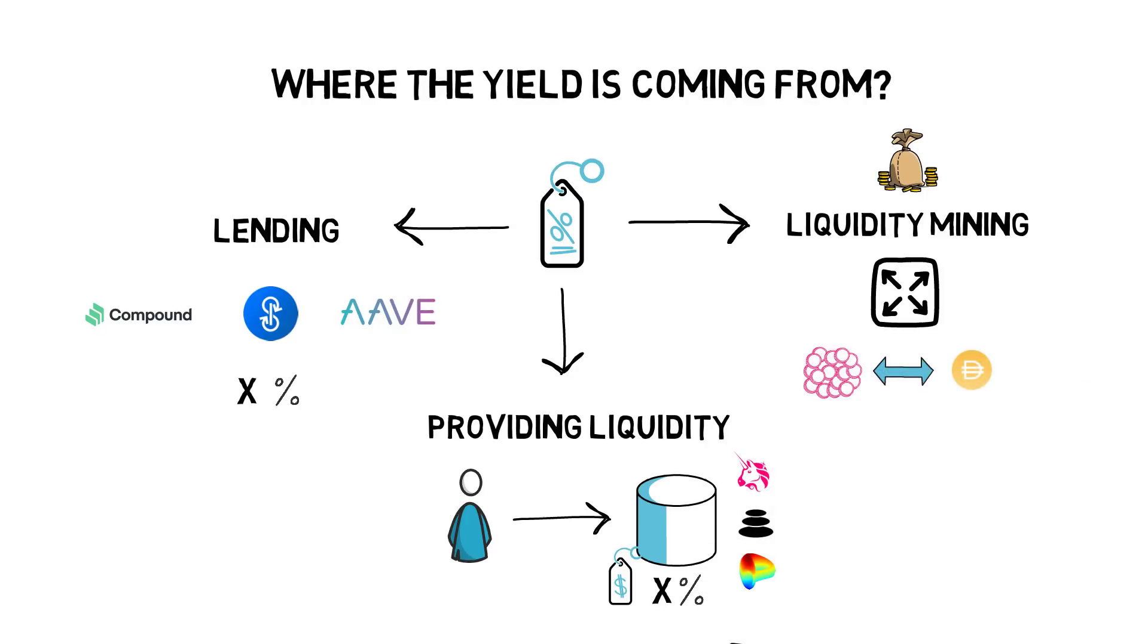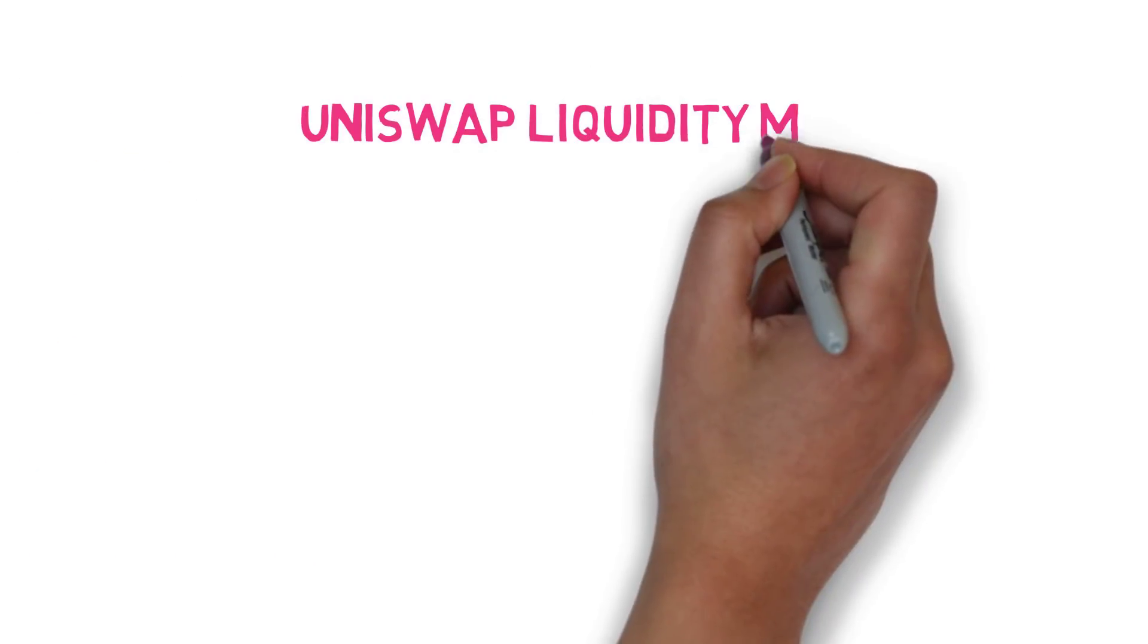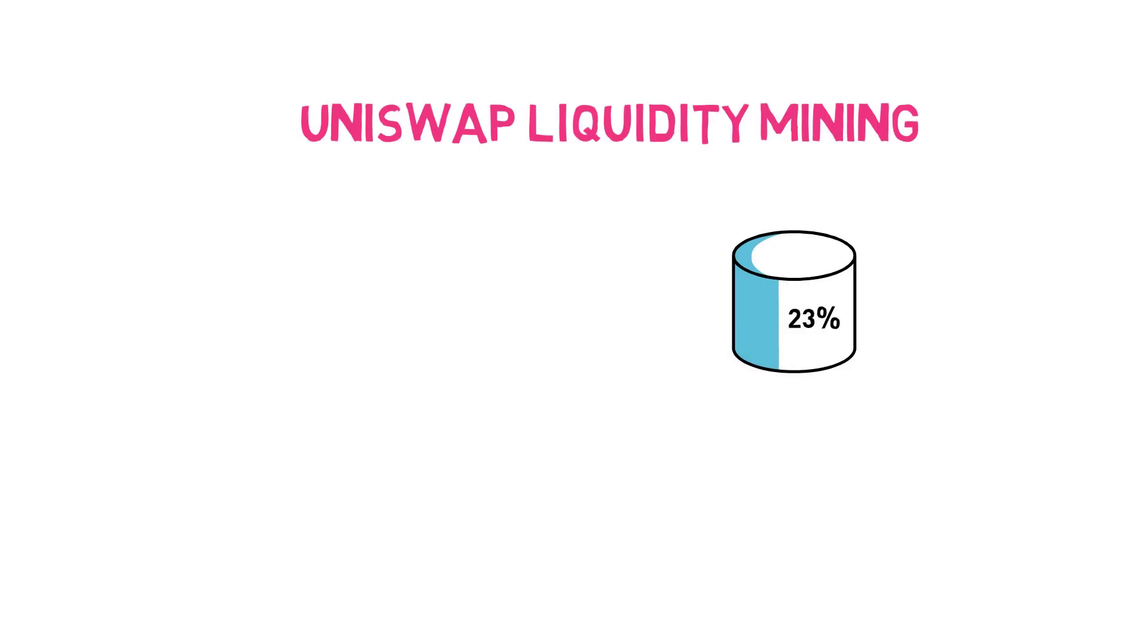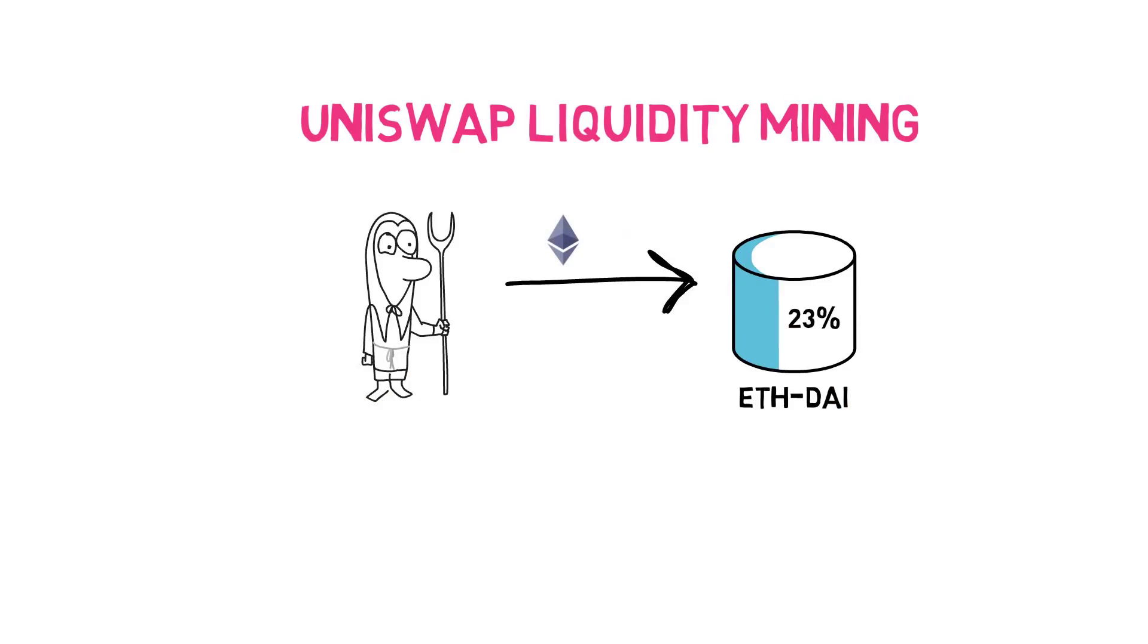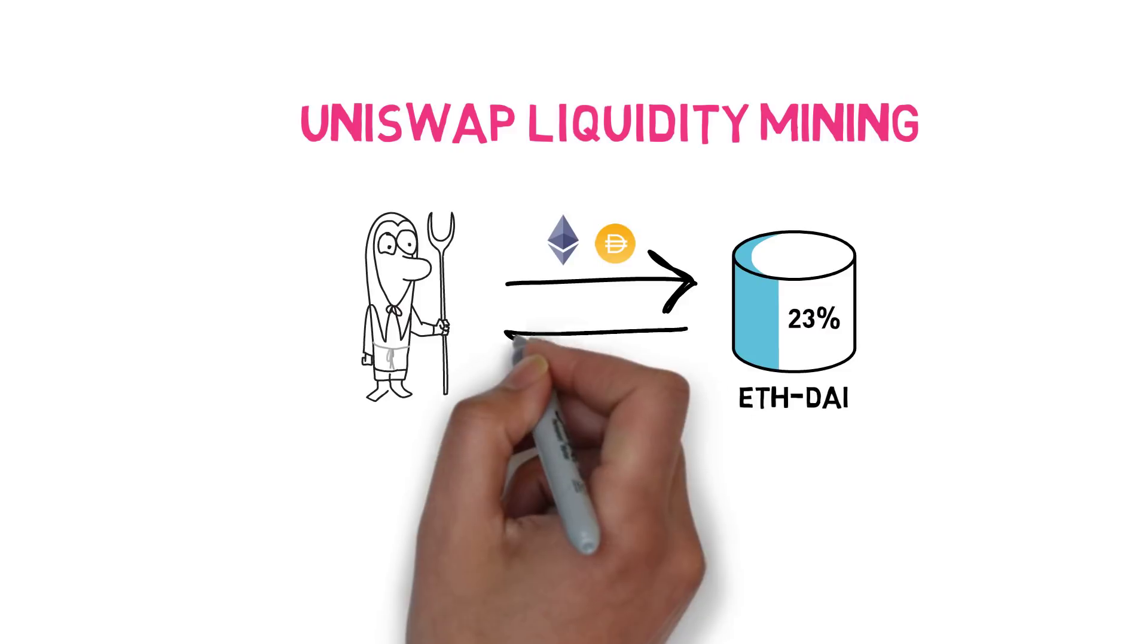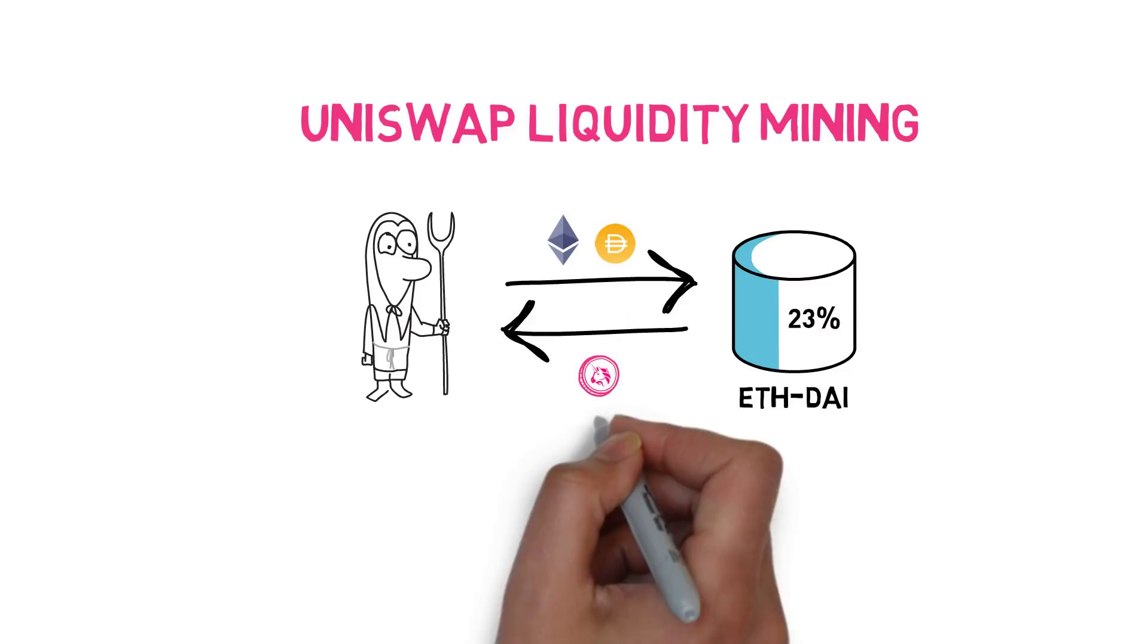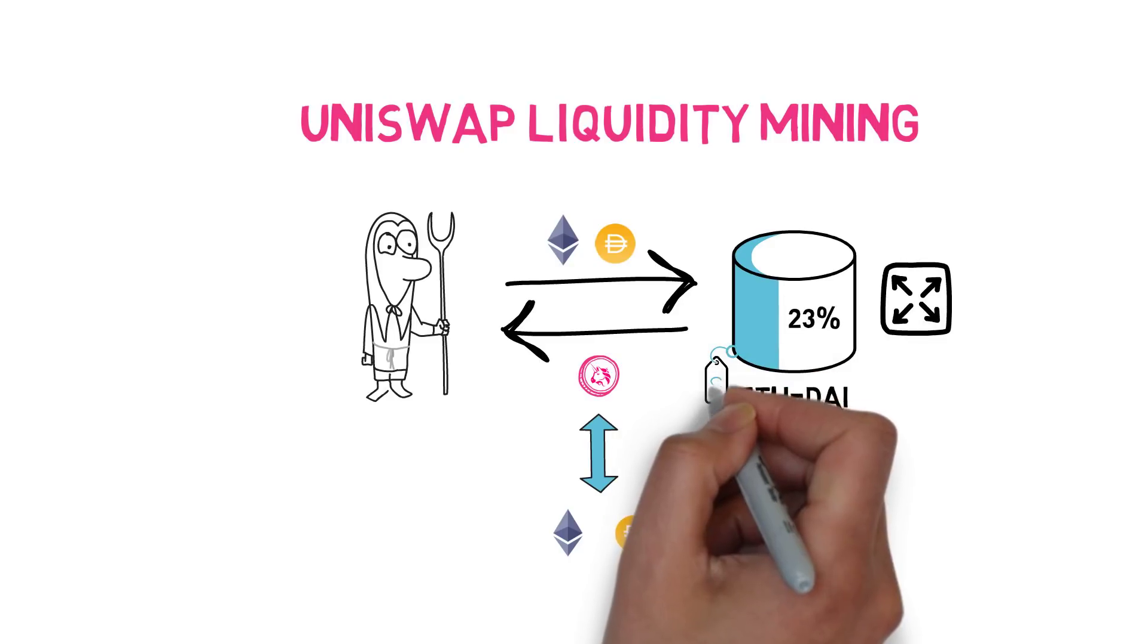Let's take Uniswap's UNI token liquidity mining program as an example that currently yields 23% in their ETH DAI liquidity pool. Yield farmers can supply their ETH and DAI to a liquidity pool and start receiving UNI tokens that can be later sold for, let's say, ETH or a stablecoin, greatly improving their APY generated from the liquidity pool fees.